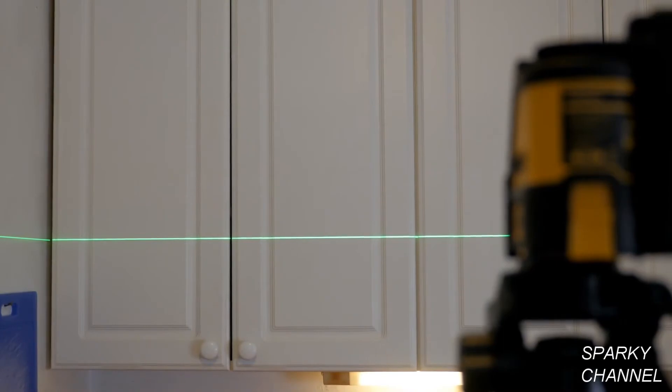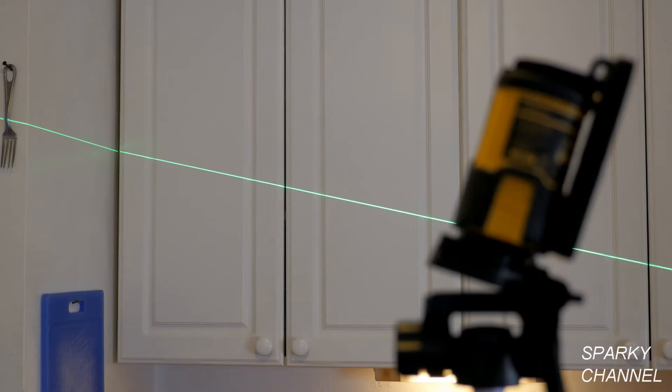If you set the laser up within four degrees of level, it will self-level in a second or two. If you set it up more than four degrees out of level, the beam will flash to alert you to the problem.